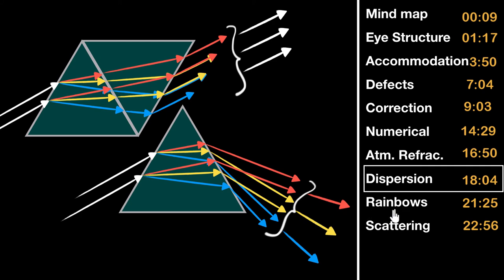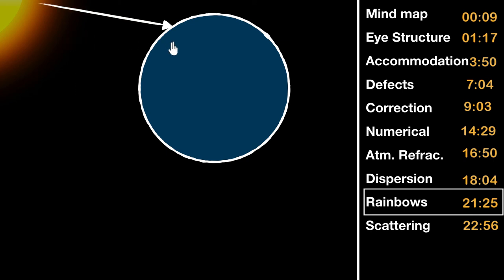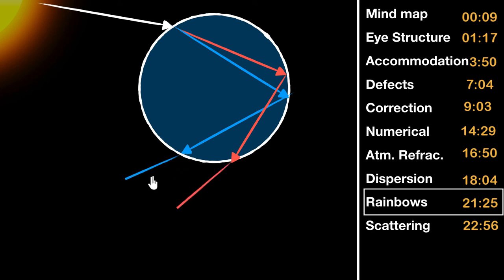An application of dispersion can be seen in rainbows. When white light from the sun enters a raindrop, it acts like a prism and splits into constituent colors through dispersion. Most of that light exits the raindrop, but the remaining light gets internally reflected and then exits from the other side. When you look from that direction, you get the rainbow. A rainbow involves two refractions and one reflection.